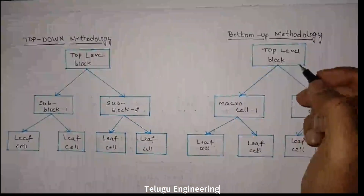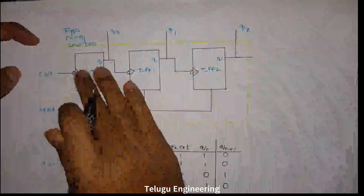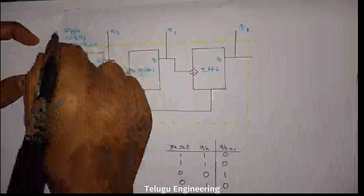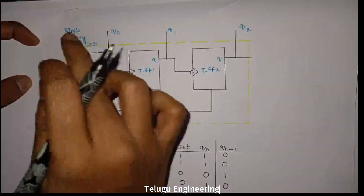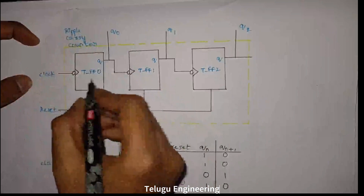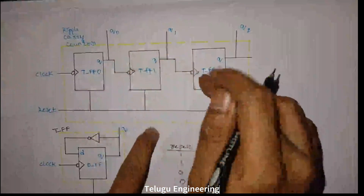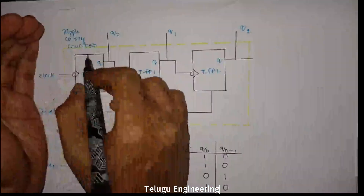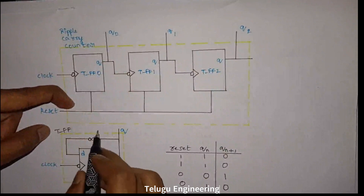Let us take one example: the ripple-carry counter. I am using three T flip-flops here. The entire connection forms the ripple carry counter. Each T flip-flop is built using a D flip-flop with an inverter.